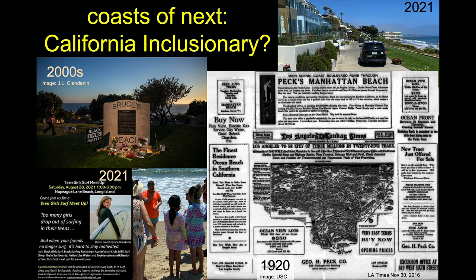One group I work with is Pacoima Beautiful, which takes folks — in this case from the Valley — to the beach in the summertime to get everybody to the beach, because this is everybody's heritage. One of our first trips in 2021 was to Lechuza Beach in Malibu.